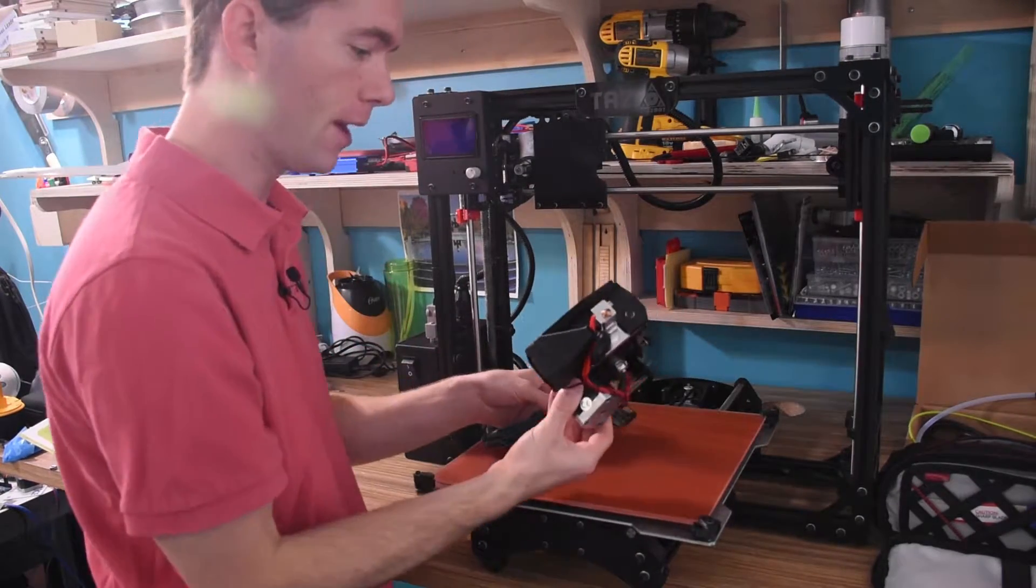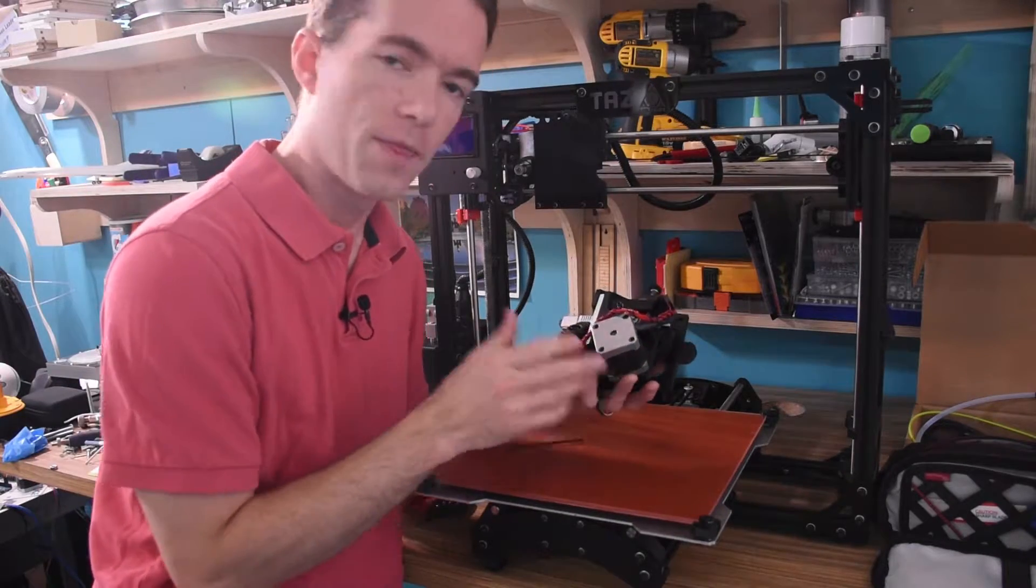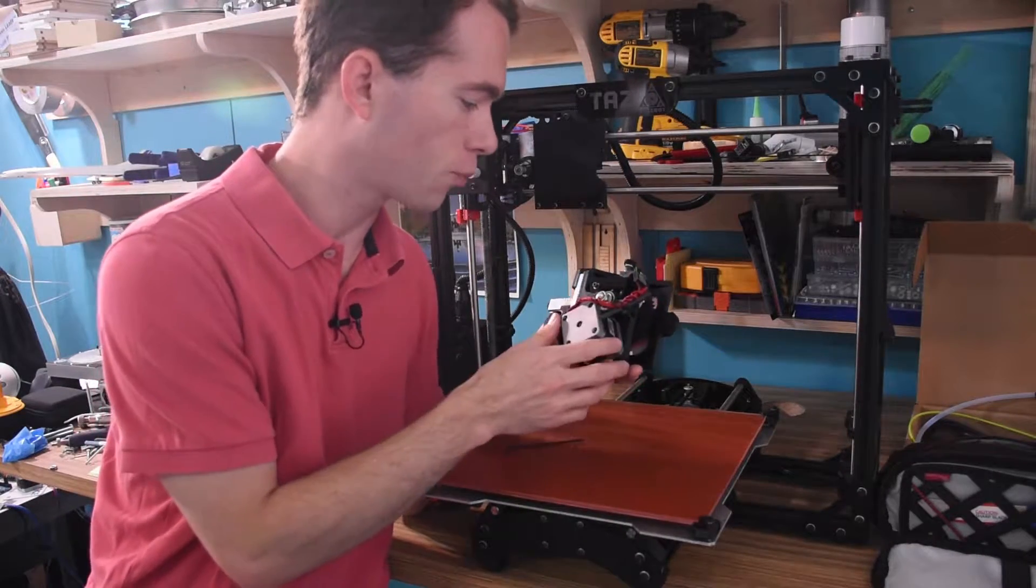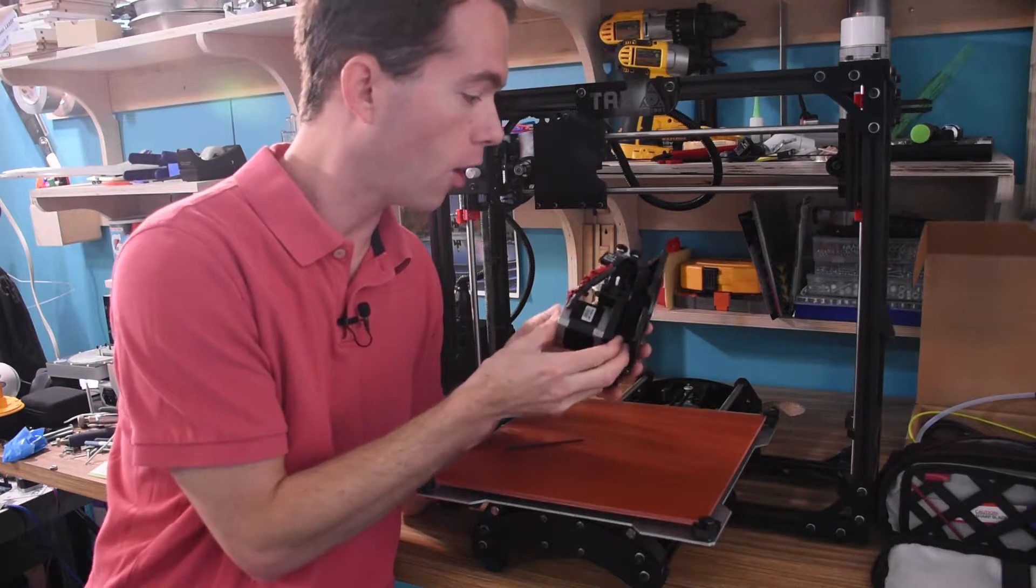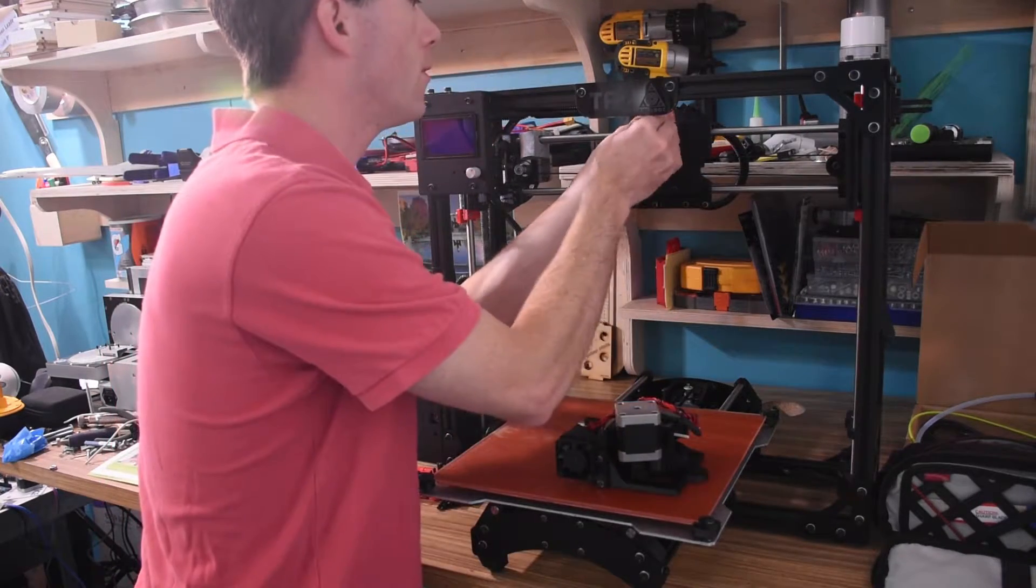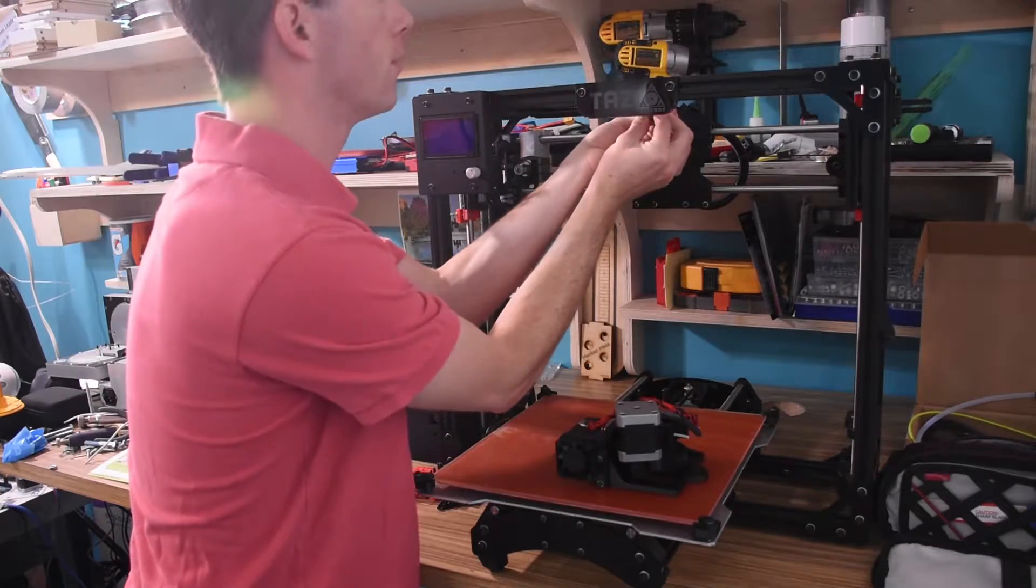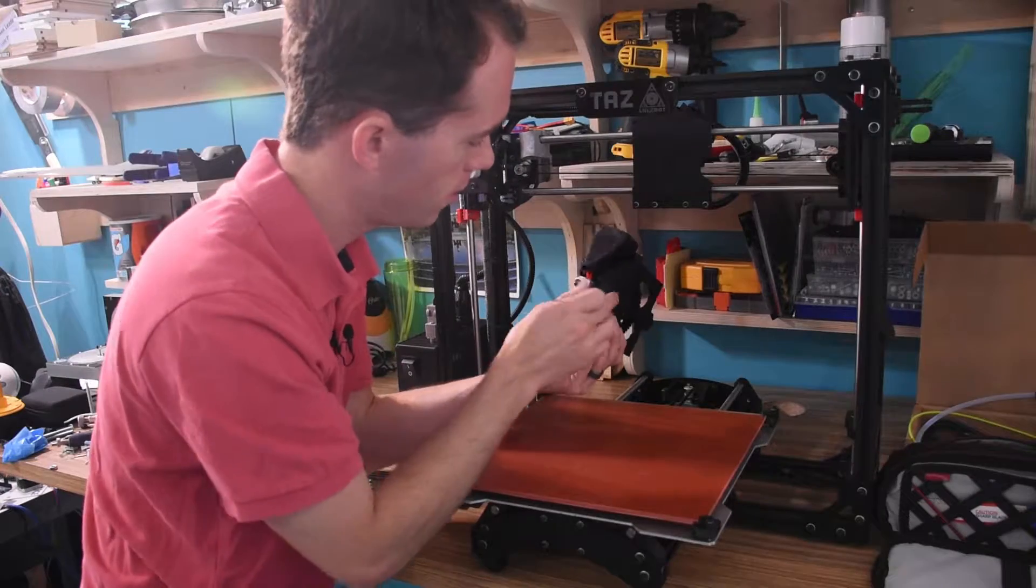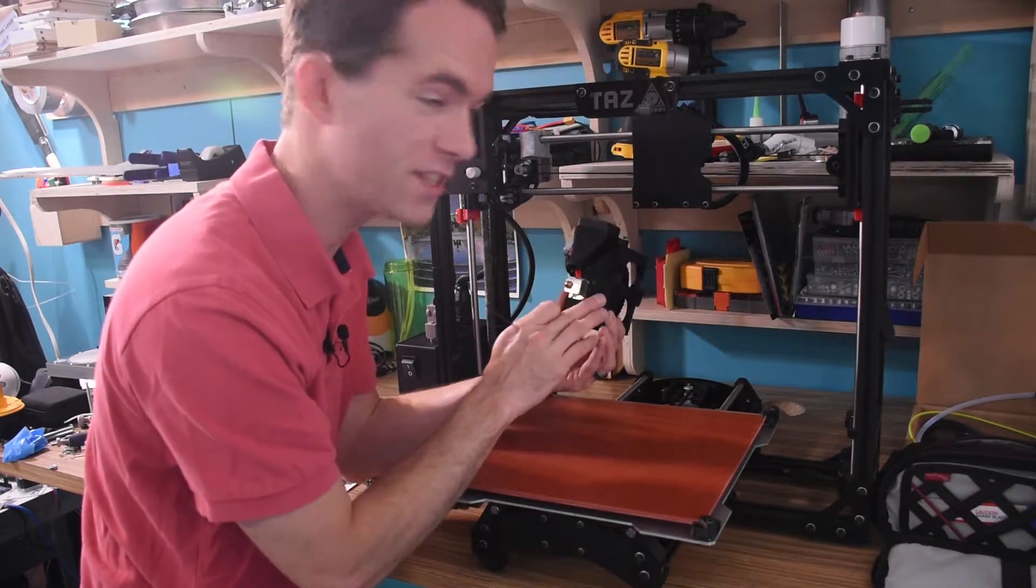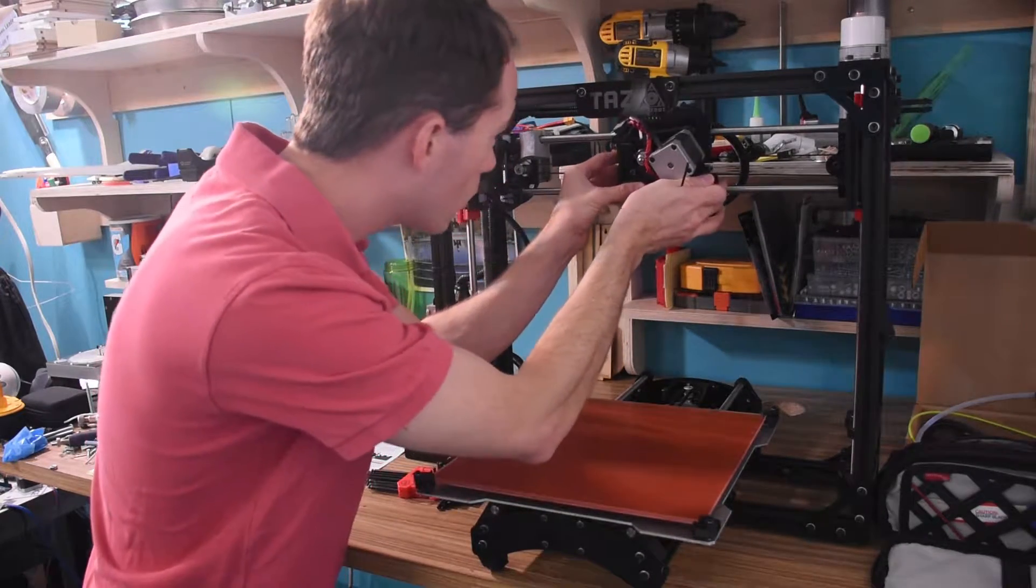So it is time to now mount the print head. This printer head assembly is really cool. The majority of the parts here are 3D printed. So we take out this screw in the top center of the X axis carriage. There is a nice slot right here that this tapered tab fits into.